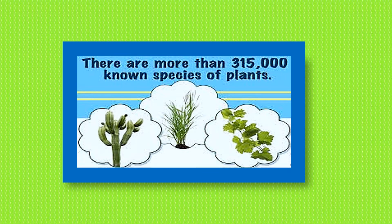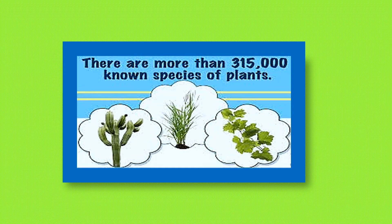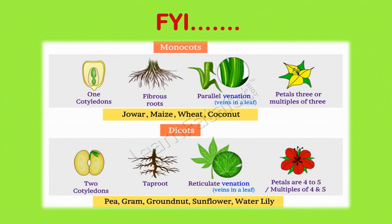For your information, there are more than 315,000 known species of plants. Now when you look at a plant, you will be able to say at least whether it is a cryptogam or phanerogam, flowering or non-flowering. You can also look at a seed and classify it as monocot or dicot. If you learn the lesson well, you will be able to go out, see different plants, and classify them. Thank you.